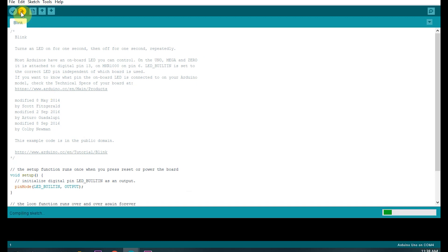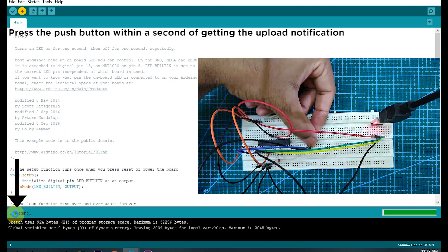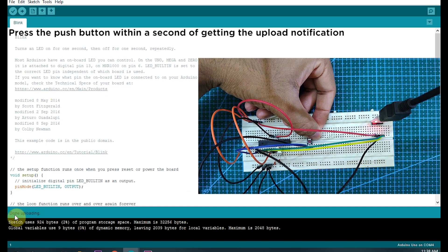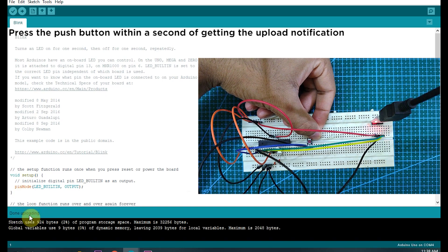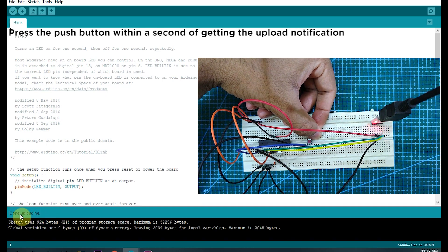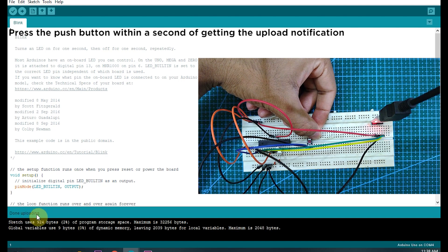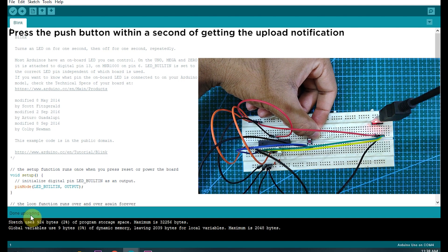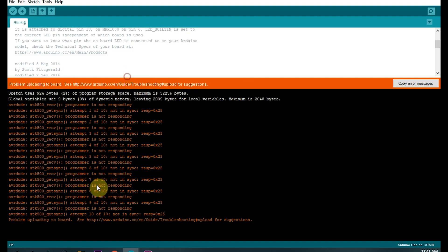After that, choose any sketch to upload and click the upload button. Once compiling is done and you get the 'uploading' notification, press the push button on the breadboard for manual reset. You have to do this immediately within a second after getting the upload notification. If you've done it right, you'll get the 'done uploading' notification. Otherwise, you'll receive an error message as shown in the video, and you'll have to repeat the process.